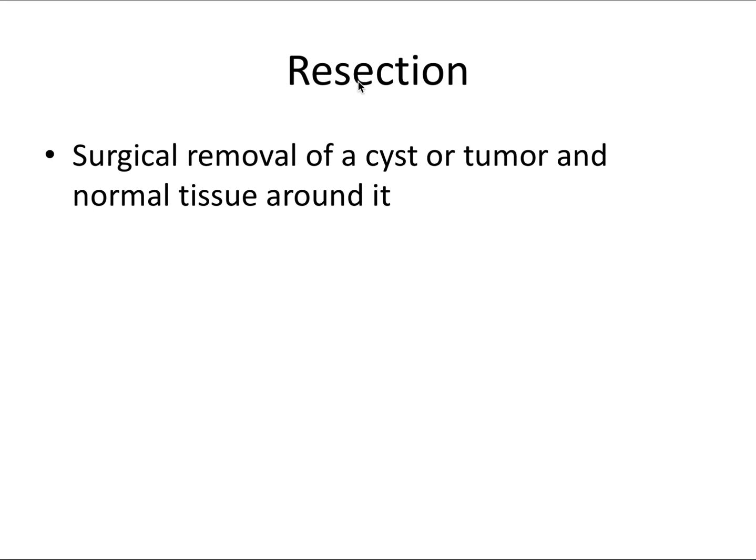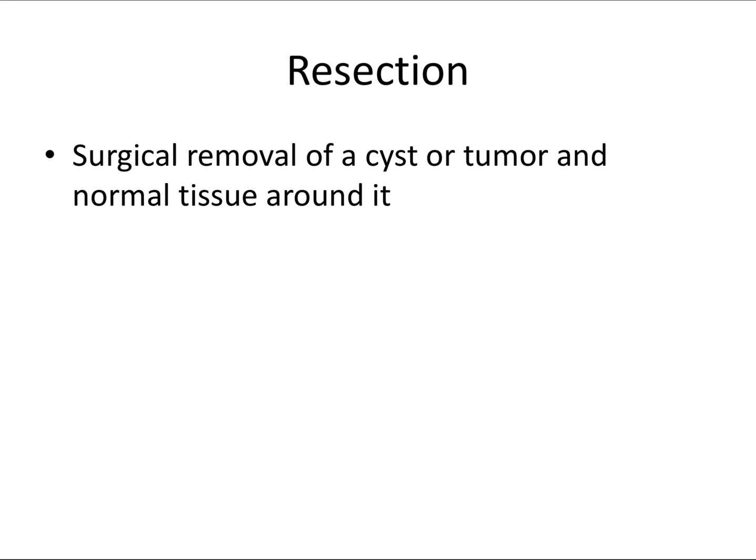Lastly, we have resection. This is the surgical removal of a cyst or tumor along with normal tissue around it. If you're concerned about the reappearance of a certain lesion and want wide margins — say for an aggressive ameloblastoma — resection of the mandible or maxilla can be used in that scenario.